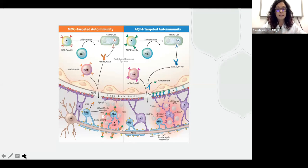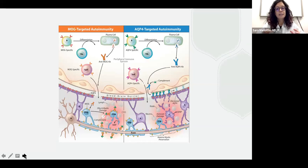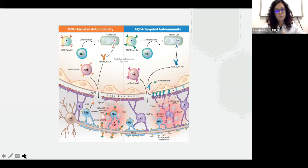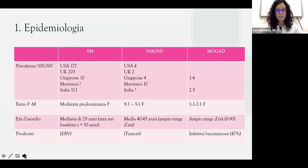La prima grossa differenza tra queste tre malattie è che sia nella neuromielite ottica che in MOGAD abbiamo come marcatore di malattia la presenza di specifici anticorpi. In caso di neuromielite ottica sono spesso gli anticorpi anti-acquaporina, che hanno come target gli astrociti, mentre nel caso di MOGAD abbiamo gli anticorpi anti-MOG che hanno come target gli oligodendrociti. Nei pazienti con sclerosi multipla non ci sono specifici anticorpi.